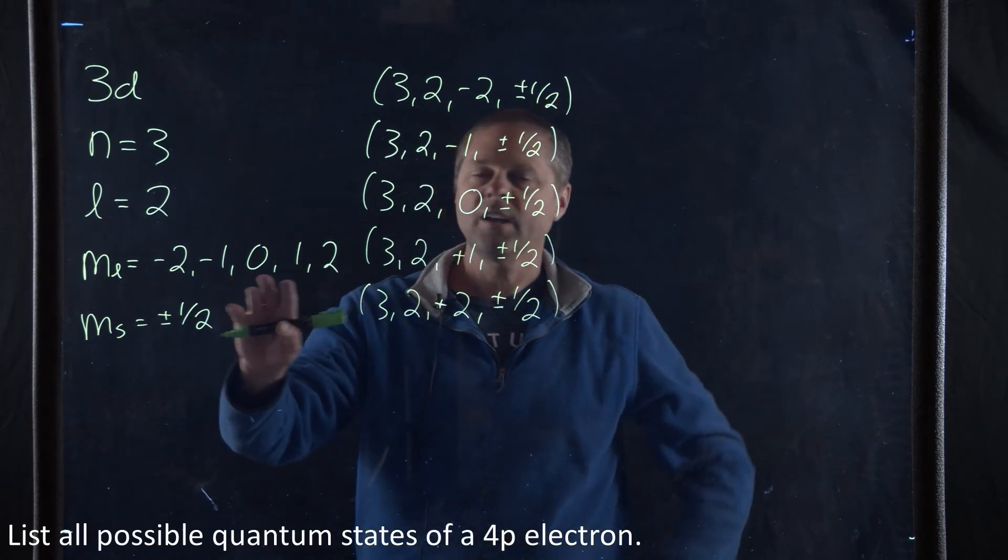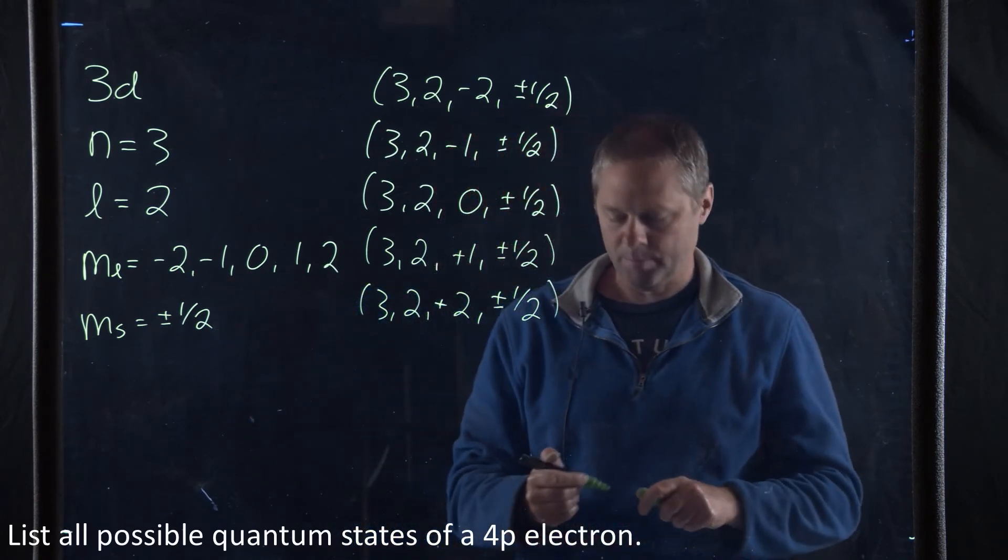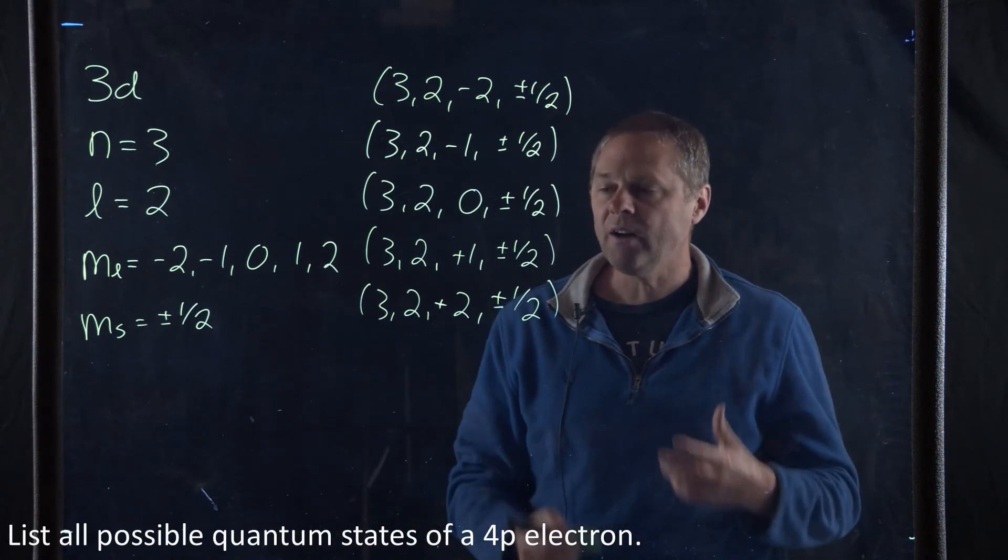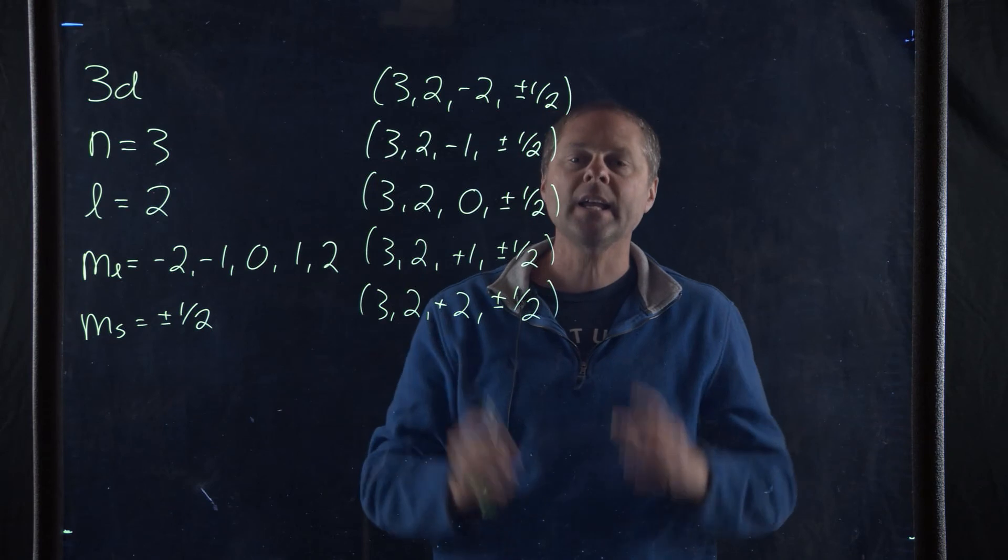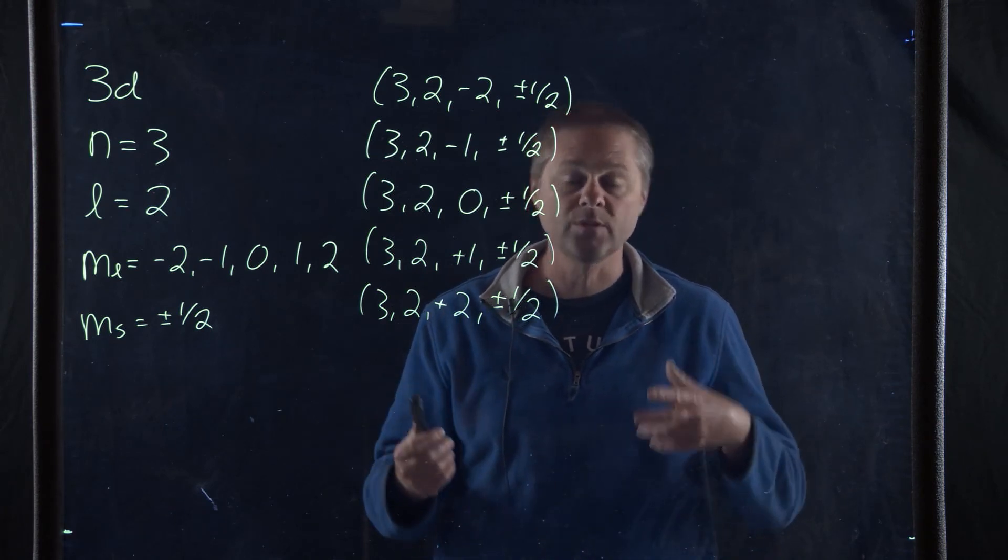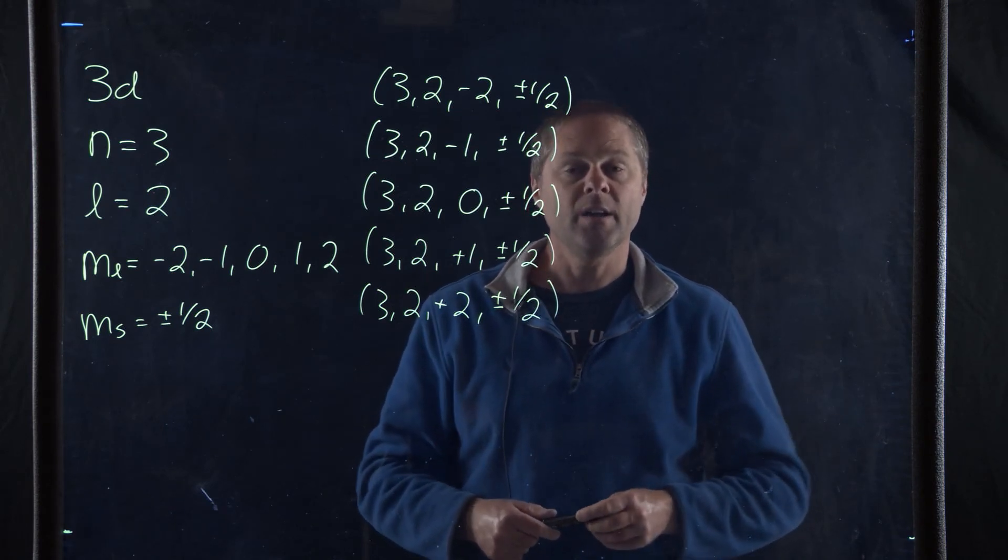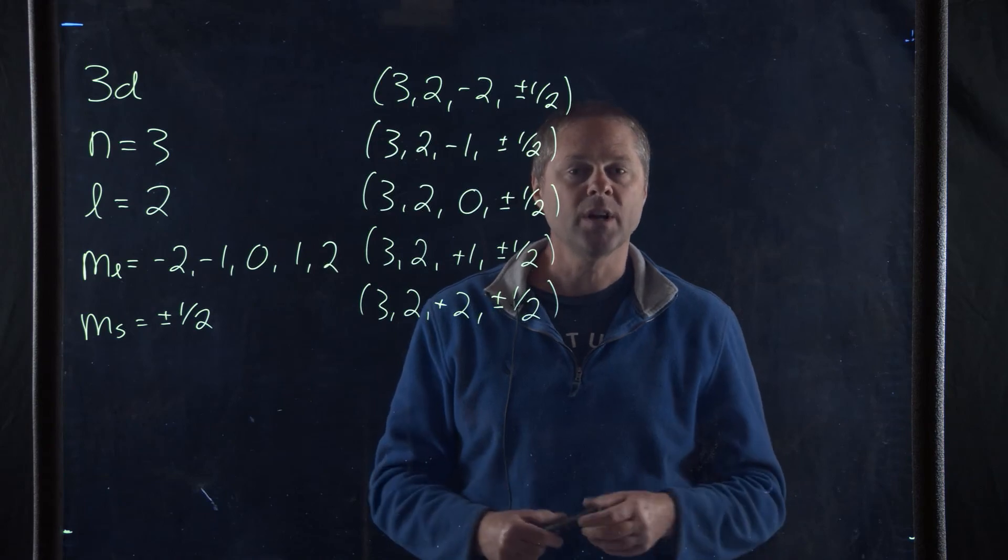Now what this tells us—the magnetic quantum number tells us the orientation of the orbital in space relative to the x, y, and z plane. If you have any questions on these quantum numbers, please let me know. Thank you.